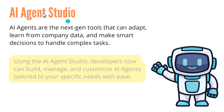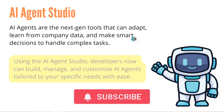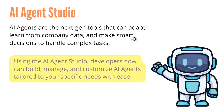AI Agent Studio — that's a buzzword around the internet. Automation Anywhere, in their Imagine event, announced AI Agent Studio. So what exactly are AI agents? Before knowing the Agent Studio, AI agents are the next-gen tools that can adapt and learn from the data that you provide. Along with your repetitive bots that you code, they can add some decision-making power. You can build your agents along with your bots.